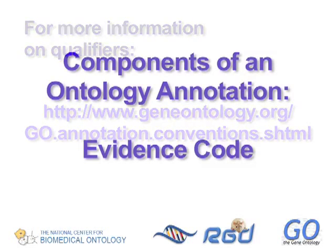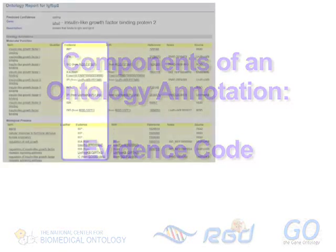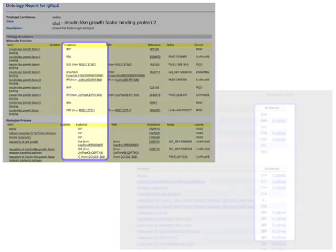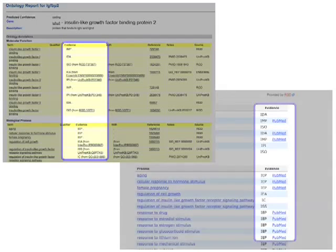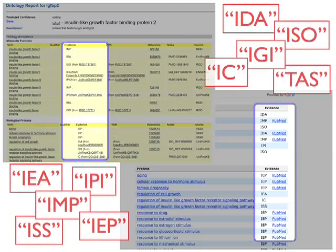If you've spent any time looking at Gene Ontology annotations at database websites like RGD and Entrez Gene, you've probably noticed a column labeled Evidence, filled with an alphabet soup-like list of letters. These are evidence codes.